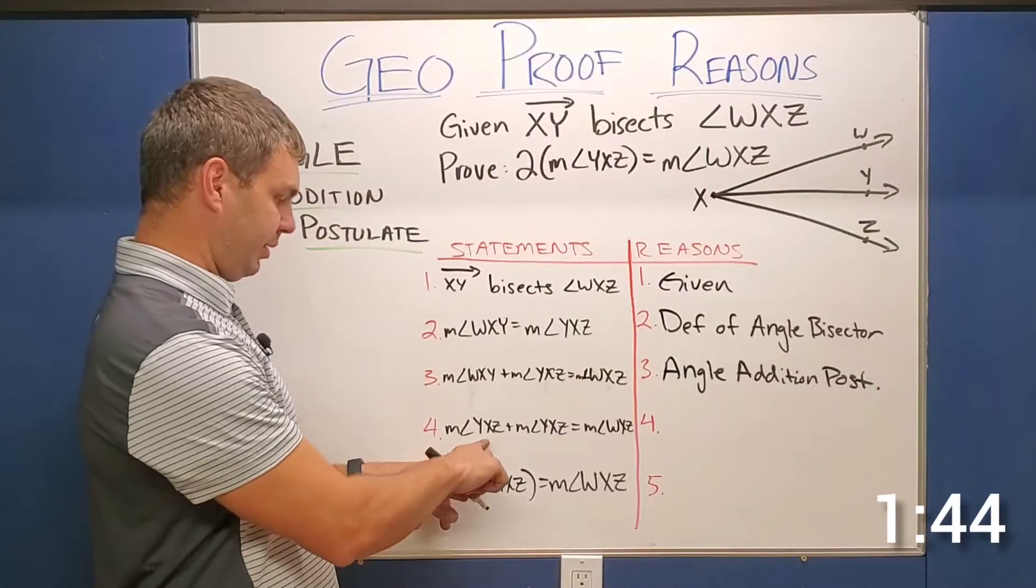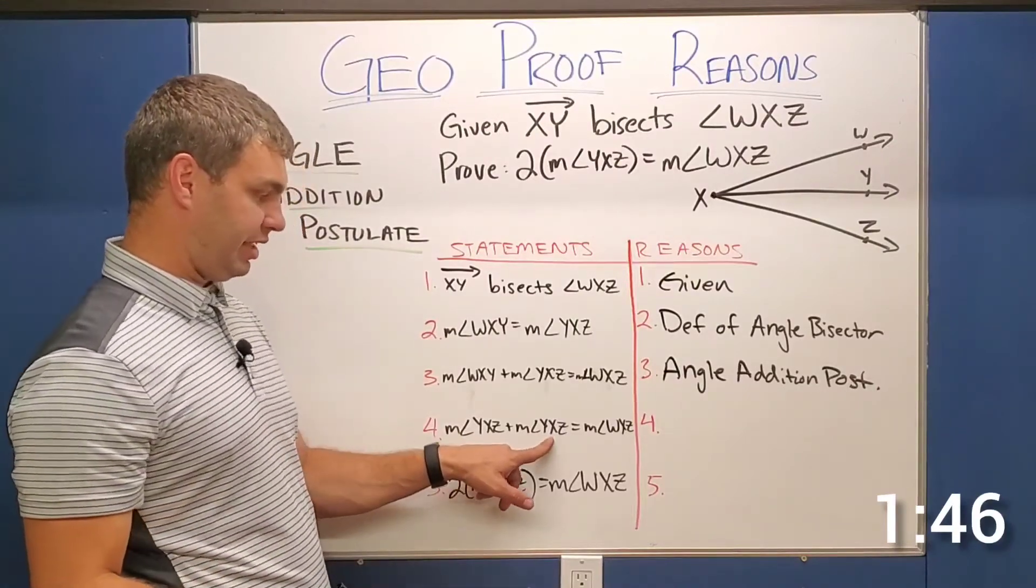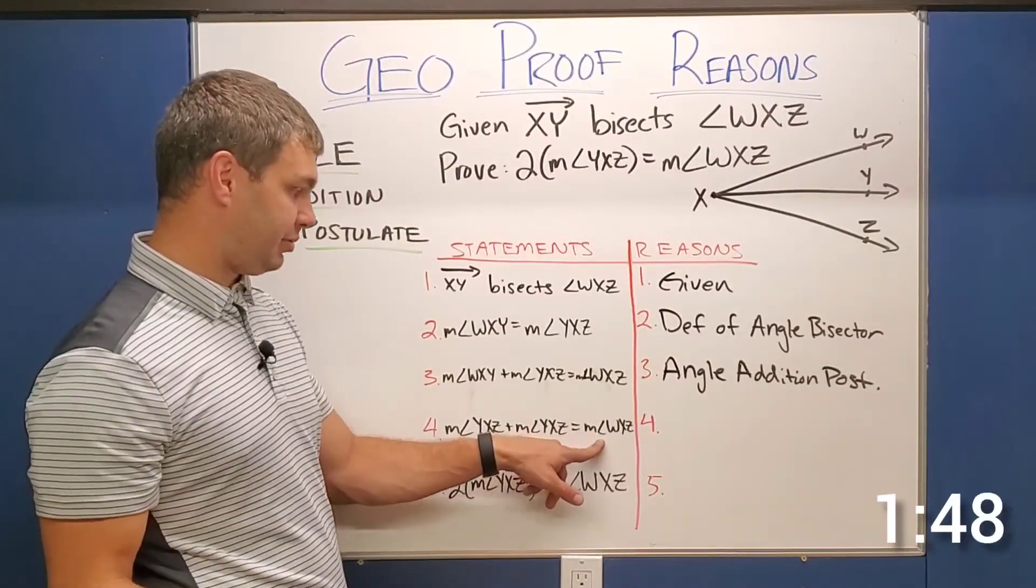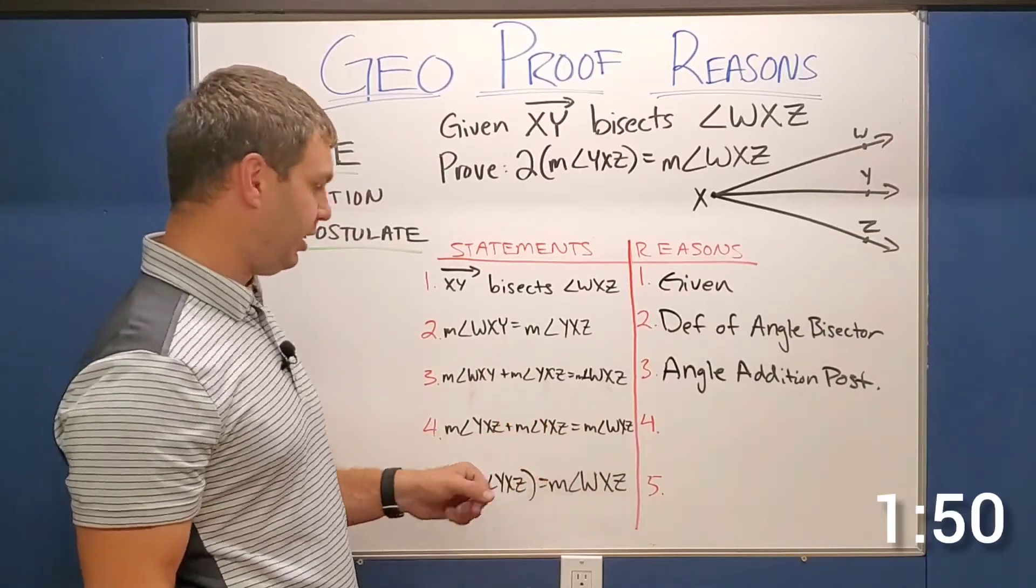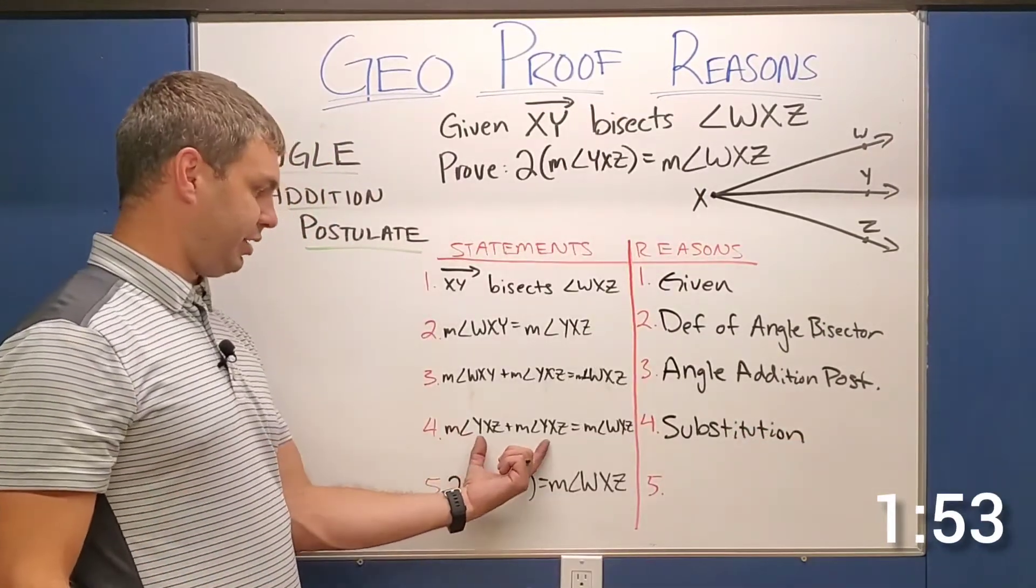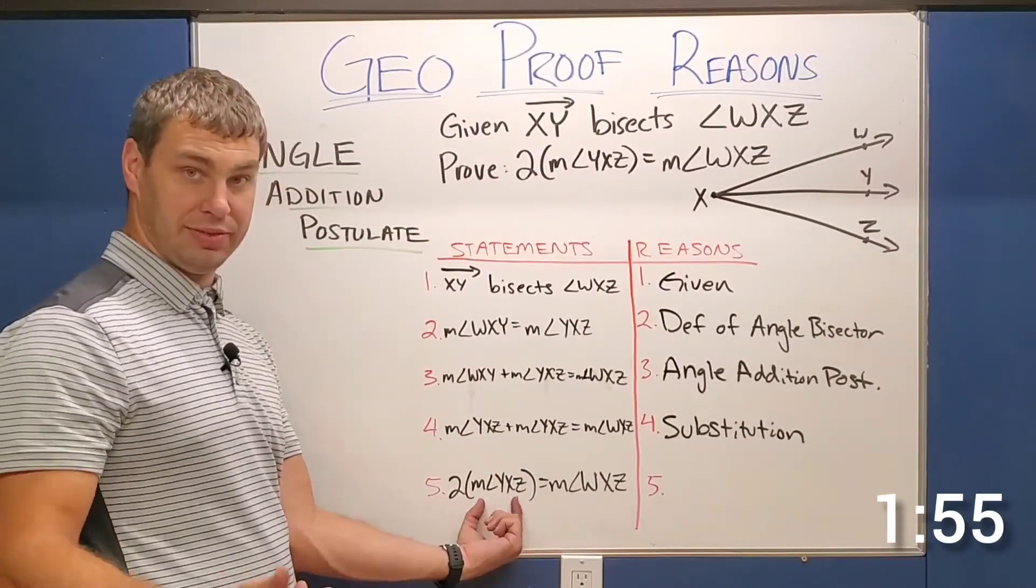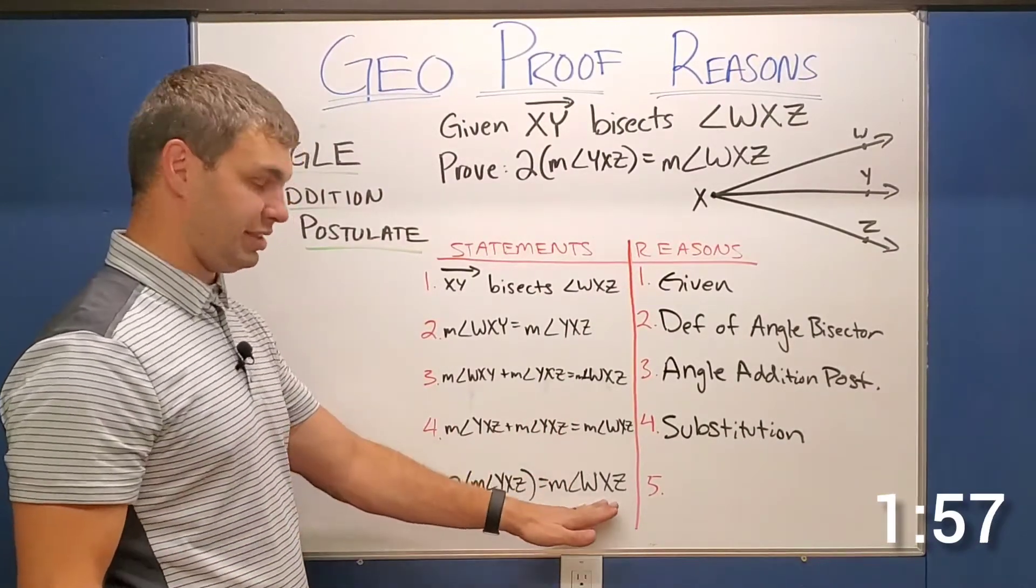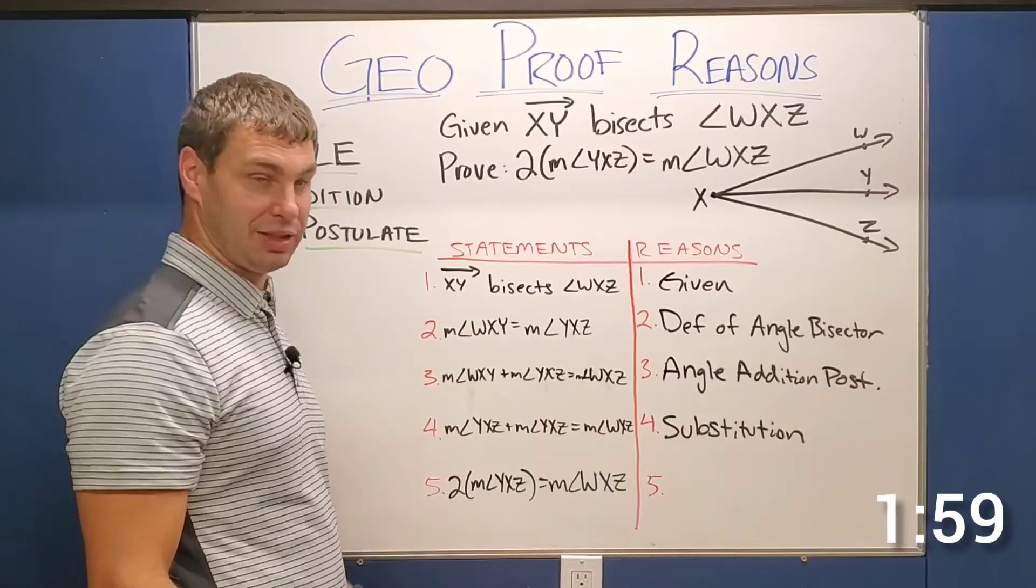Step four now says that the measure of angle YXZ plus the measure of angle YXZ again equals the measure of WXZ. Well, here what we did is we substituted this in. And then last step, since I do have two of those, I can just say two times one of them, since there's two of those, equals the entire thing. That is just combining like terms.